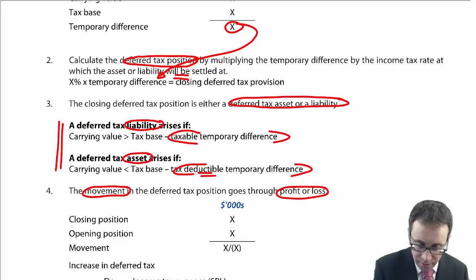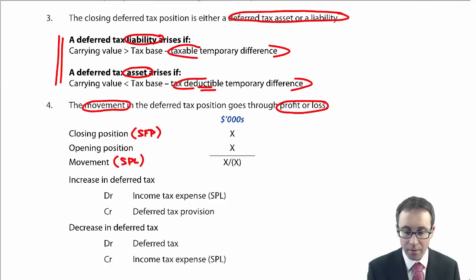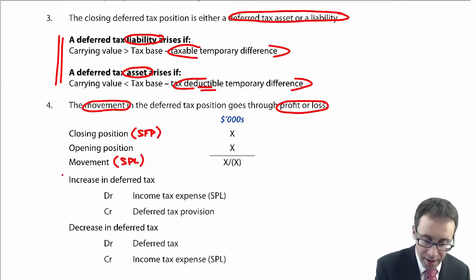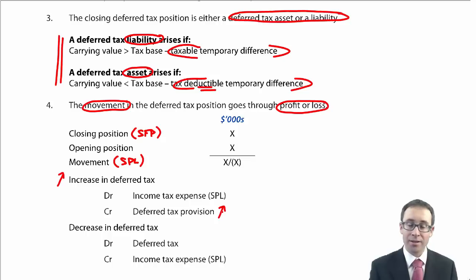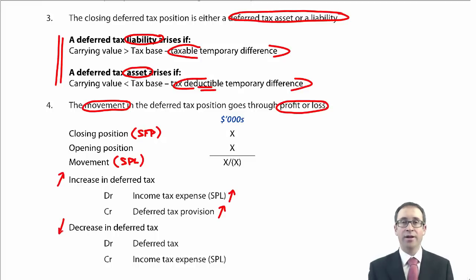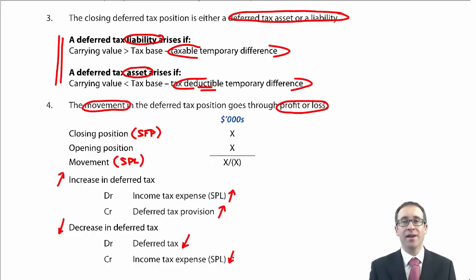The closing deferred tax figure goes on the statement of financial position; the movement goes in the statement of profit or loss. If there is an increase in your deferred tax liability, you credit the deferred tax provision and debit the expense. If there is a reduction in your deferred tax liability, you debit your deferred tax and credit the expense, reducing it.